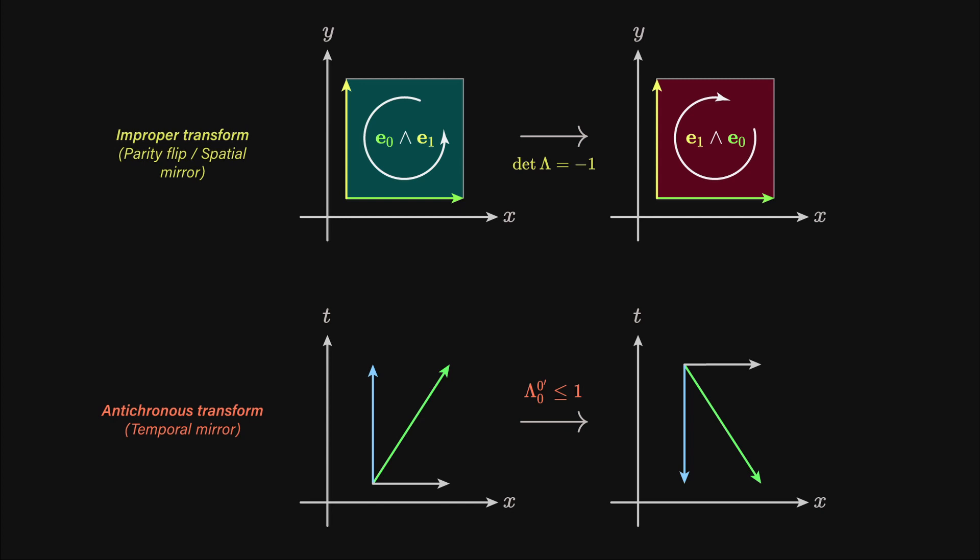Therefore, transformations that flip parity are known as improper, and the ones that conserve it are known as proper. And so all the matrices that obey these determinant rules are called proper or improper, because the determinant is just the volume magnitude, and its sign is the orientation.